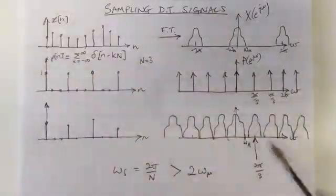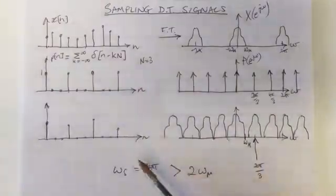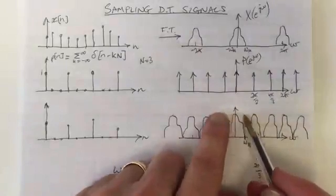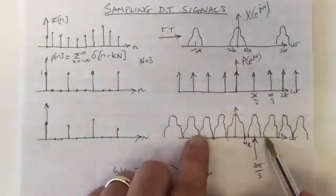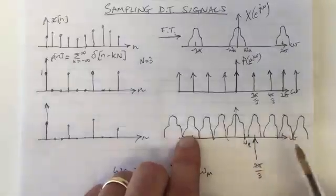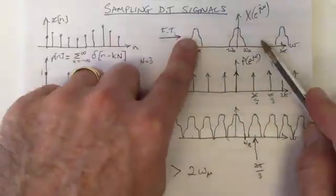And that means that when you've stored this, you could go back to this one by multiplying, in the frequency domain, by a square function which zeroes out all the intermediate copies, and you would recover this version here.